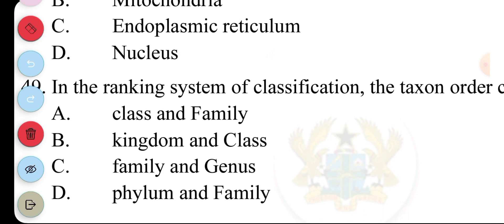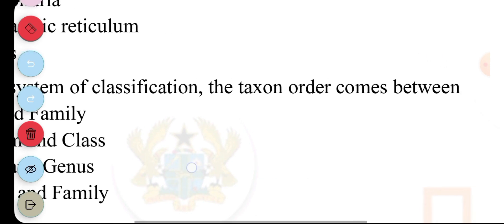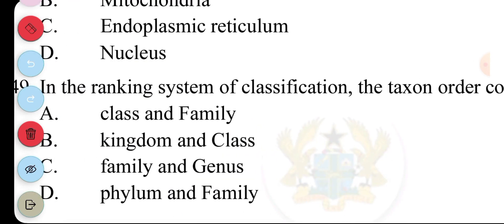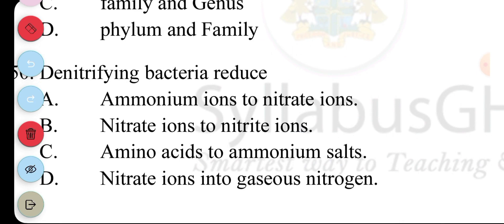49. In which... Linnaean system of classification... The taxon order comes between? So, the answer to question 49... is A. Class and family. Question 50. Denitrifying bacteria reduce. So, the nitrifying bacteria... Converts nitrate ions into... Gaseous nitrogen. So, the answer is D. Click on the image by my channel name... To see more videos that I make.